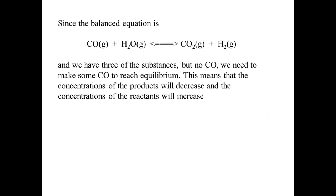We have the balanced equation, and since we have three of the substances but no CO, we need to make some CO to reach equilibrium. This means that the concentrations of the products will decrease and the concentrations of the reactants will increase. So the changes become CO plus X, for H2O plus X, for CO2 minus X, and for H2 minus X.